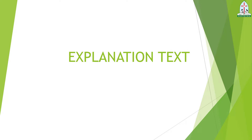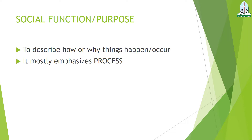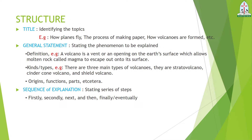Let's check out what explanation text is. This is the social function or purpose — tujuan atau fungsi dari explanation text. Explanation text adalah satu jenis text yang tujuannya adalah untuk menjelaskan bagaimana atau mengapa sesuatu terjadi. In English: to describe how or why things happen or occur. Mostly, explanation text menekankan pada proses — jadi yang dijelaskan adalah proses terjadinya sesuatu. Itu tujuan dari explanation text.